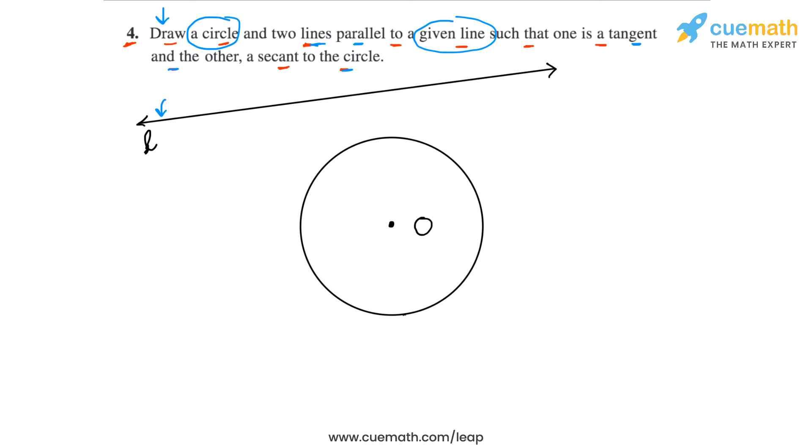So here's what we are going to do. Through the center of the circle O we are going to draw a line that's perpendicular to the given line L. This is easy to do. You know how to construct a line perpendicular to a given line from an external point. So from O here's the perpendicular that we are going to construct.